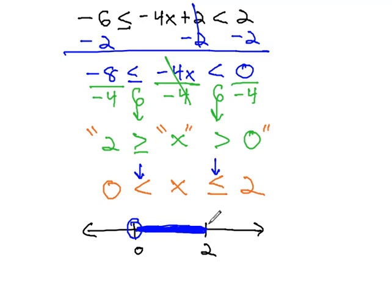because we also have or equal to, we'll use a closed circle. This graph tells us that any value we pick between 0 and 2, including 2 but not 0, will make this tripartite inequality a true statement. We'll end up with something that's between -6 and positive 2.